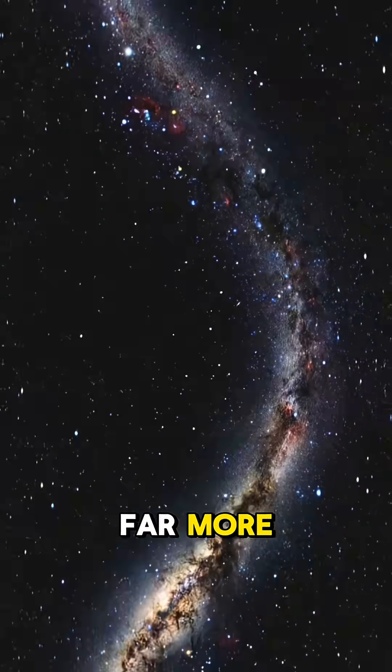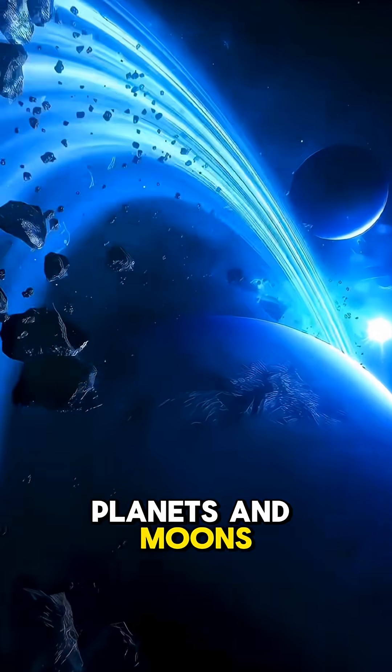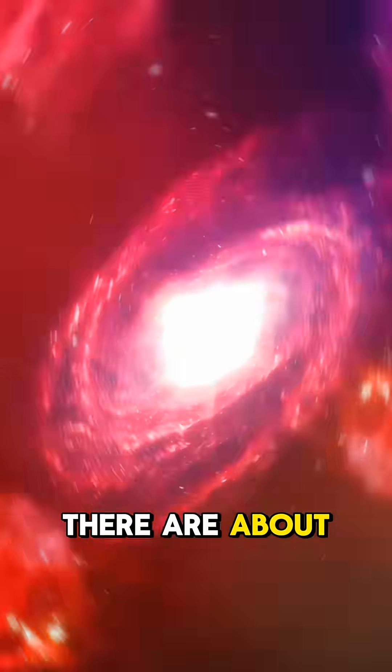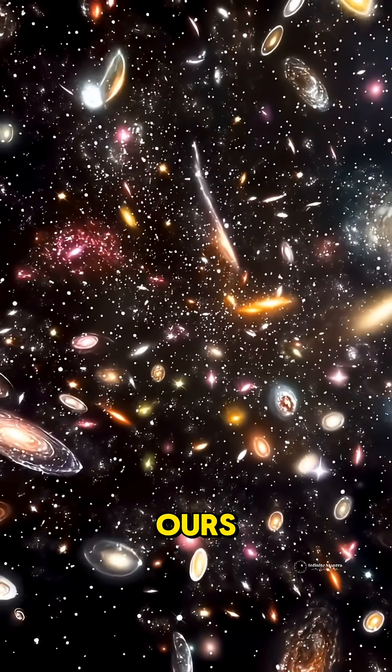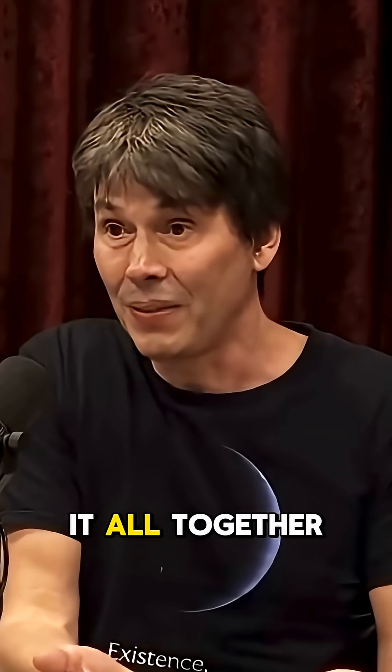Some even have far more, like giant systems with dozens of planets and moons. Now, get this. There are about two trillion galaxies like ours in the observable universe. When you multiply it all together,